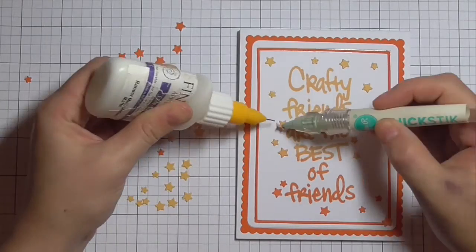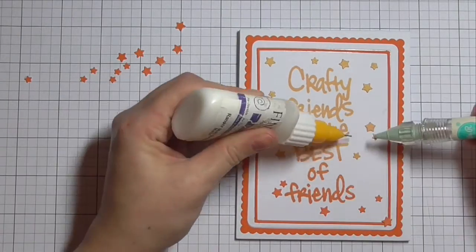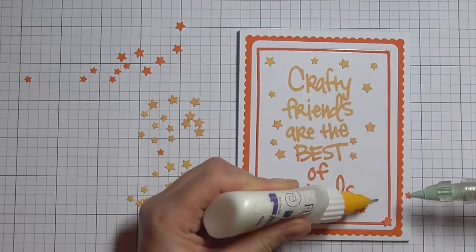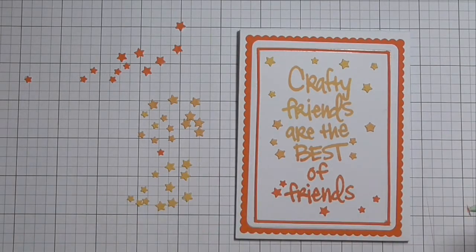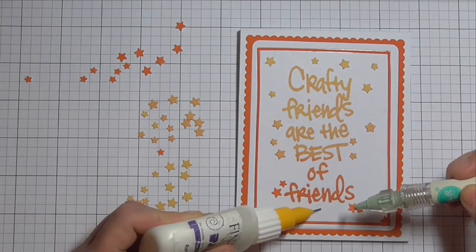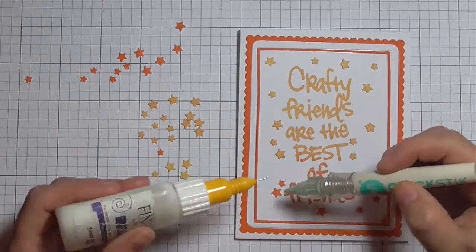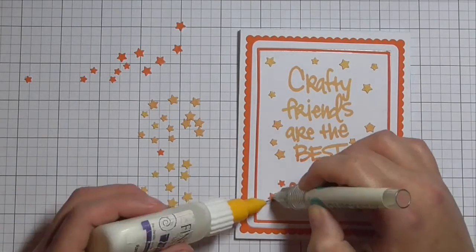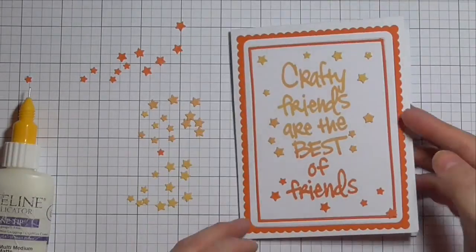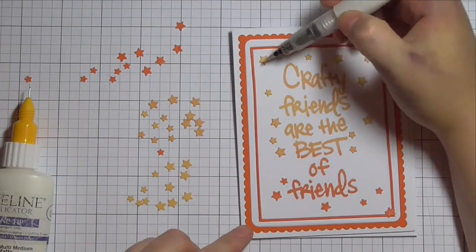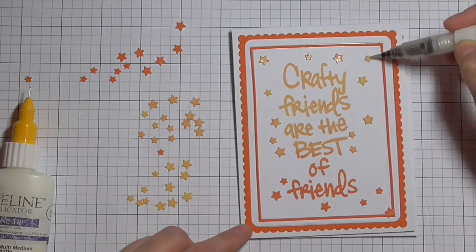So I applied some of the stars from the lightest color up near the top, the medium color around the middle and the darkest ones at the center. And that's just using some Ranger Multi Medium Matte which I've got in kind of a fine line applicator bottle which makes it really easy to put teeny tiny dots of adhesive all over the card. And then I'm using my quick stick tool to pick those up.